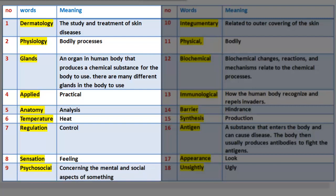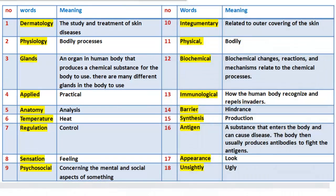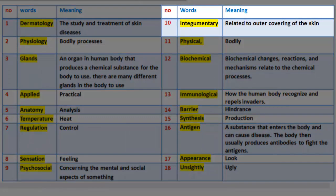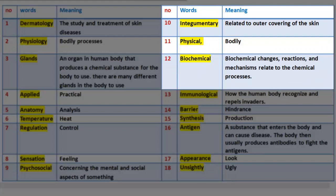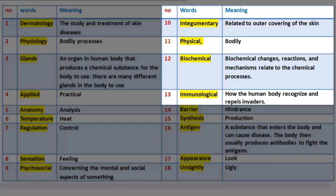Number 8: Sensation — feeling. Number 9: Psychosocial — concerning the mental and social aspects of something. Number 10: Integumentary — related to outer covering of the skin. Number 11: Physical — bodily. Number 12: Biochemical — biochemical changes, reactions, and mechanisms relate to the chemical processes. Number 13: Immunological — how the human body recognizes and repels invaders.